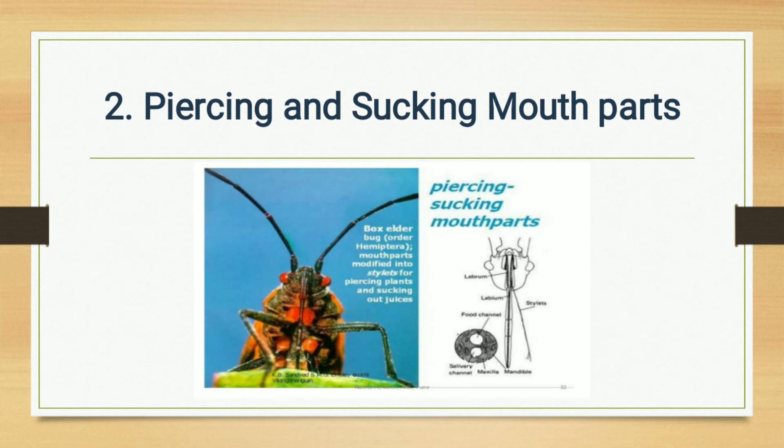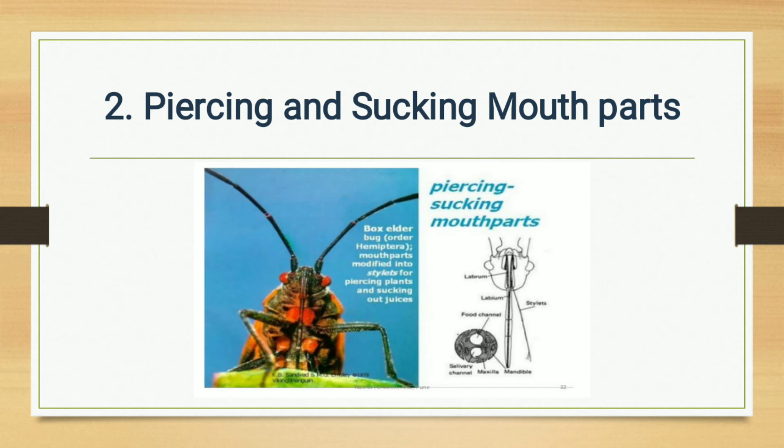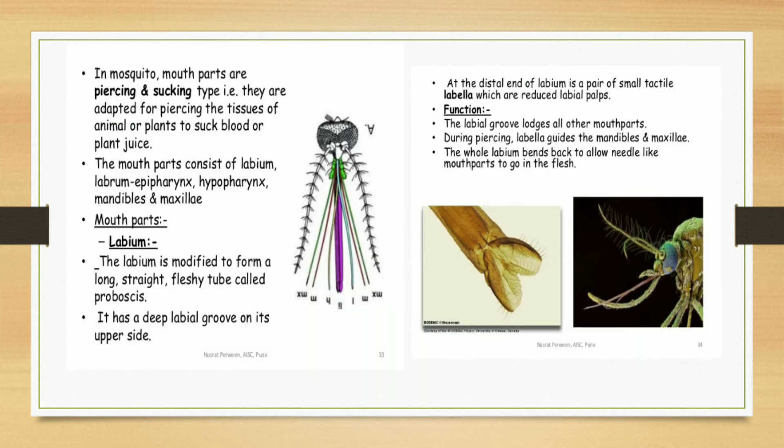Now let us see piercing and sucking type of mouthparts. Examples of this mouthpart are plant bug, mosquito—a well-known example—and bed bug. In mosquito, mouthparts are piercing and sucking type. They are adapted for piercing the tissues of animals or plants to suck blood or plant juice. The mouthparts consist of labium, labrum, epipharynx, hypopharynx, mandibles, and maxillae.